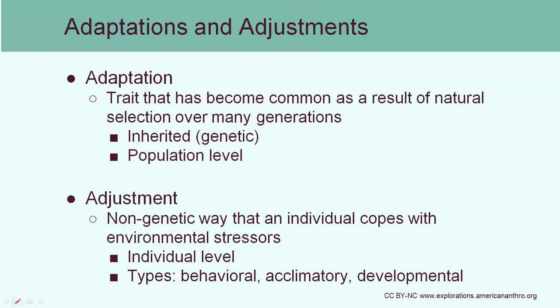Adaptation is something that is genetic. It's the idea that a trait has become more common as a result of natural selection, and this is going to happen at the population level. In comparison, adjustment is something that an individual can do to help fit into a new environment. It's a non-genetic way to deal with certain types of environmental stress, and it's usually a short-term way of adjusting to that climate until they return back to their traditional climate.